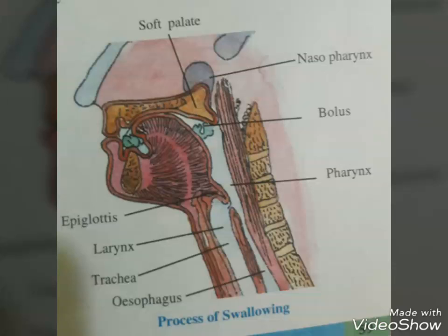The mouth leads into the buccal cavity or the oral cavity. The oral cavity has a number of teeth and a muscular tongue. Each tooth is embedded in the socket of the jaw bone. This type of attachment is called thecodont. Majority of mammals including human beings have two sets of teeth during their life — a set of temporary milk or deciduous teeth replaced by a set of permanent or adult teeth. This type of dentition is called diphyodont.